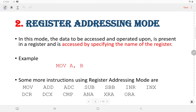The second type of addressing mode is register addressing mode. In this mode, the data to be accessed and operated upon is present in a register and is accessed by specifying the name of the register. For example, MOV A, B — here the data to be accessed is stored in register B and it is accessed by specifying register B in the instruction.